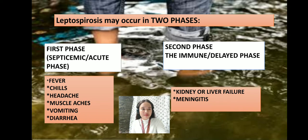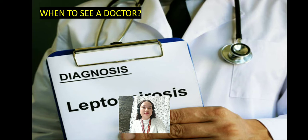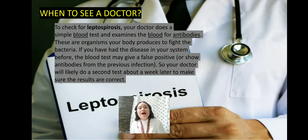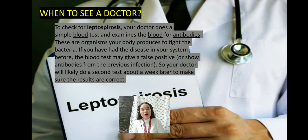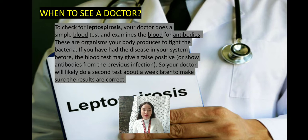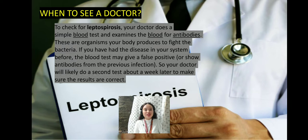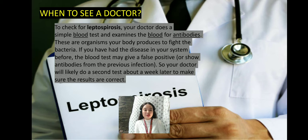Now let us discuss when to see a doctor. To check for leptospirosis, your doctor does a simple blood test and examines the blood for antibodies — organisms your body produces to fight the bacteria. If you have had the disease in your system before, the blood test may give a false positive, showing antibodies from a previous infection. So your doctor will likely do a second test about a week later to make sure the results are correct.